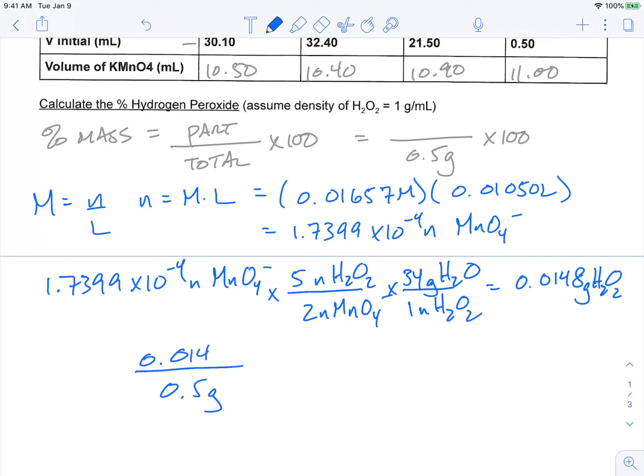So in our original 0.5 gram sample of H2O2, of our 0.5 grams of our hydrogen peroxide solution, this represents how many grams is actually hydrogen peroxide. So 0.0148 divided by 0.5, and then multiply by 100 to get a percent, we get 2.96% H2O2.